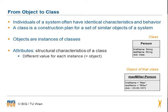But how do I get a class from an object? A class is a building plan for a set of similar objects of a system. For example, we build a template for all objects which are persons — we define the class person with the attributes first name, last name, and date of birth, because each object of class person has these three identical characteristics.